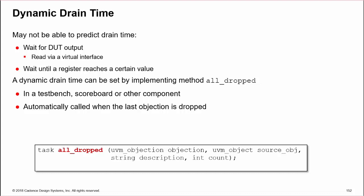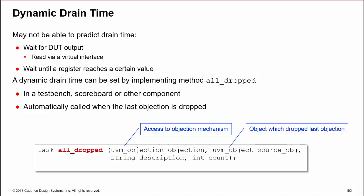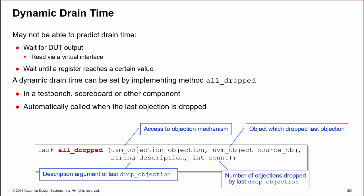All_dropped has four arguments which are rarely used. The first is a handle on the objection mechanism. The other three are derived from the last dropped objection. They are a reference to the object which dropped the last objection, the description argument from the drop objection call, and the number of objections dropped, which is usually one.